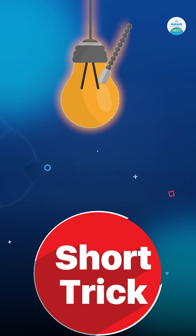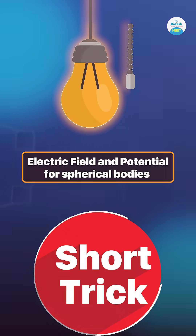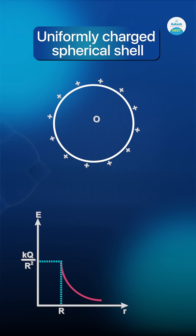Hello dear students. Let me show you a short trick to better remember the formula of electric field and potential, because many children find it difficult. First up, we have a uniformly charged thin spherical shell of charge Q and radius R.